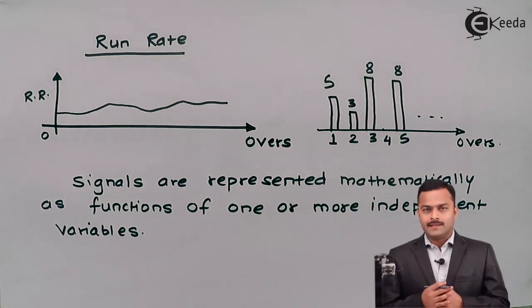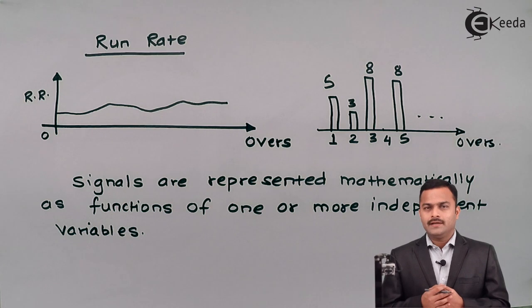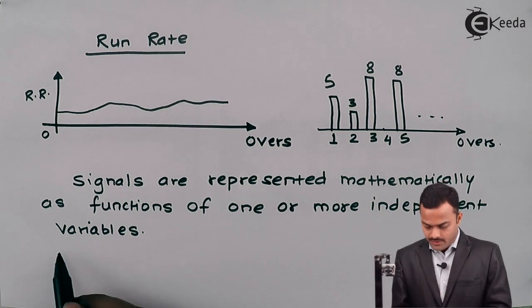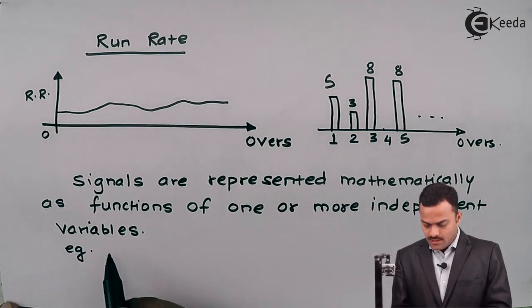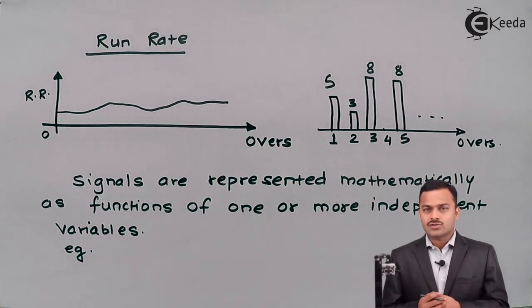Basically, every pattern, every graph will have some or other equation in which one dependent variable is there and that may depend on one or more independent variables. For example, I'm having a speech signal which is a function of acoustic pressure.